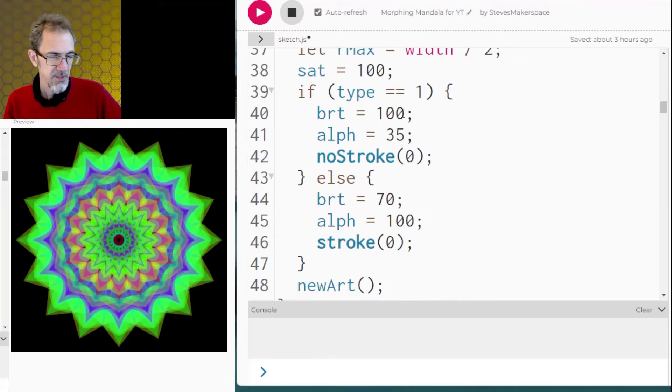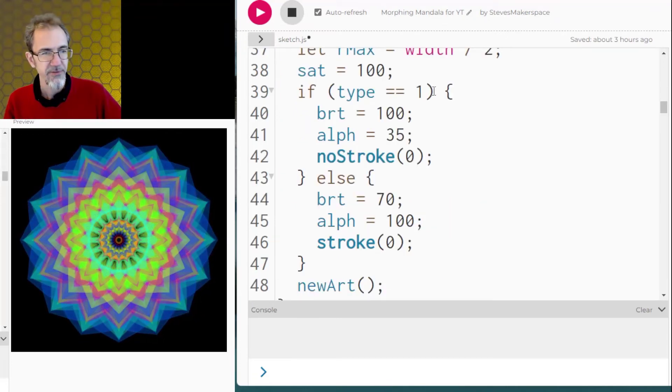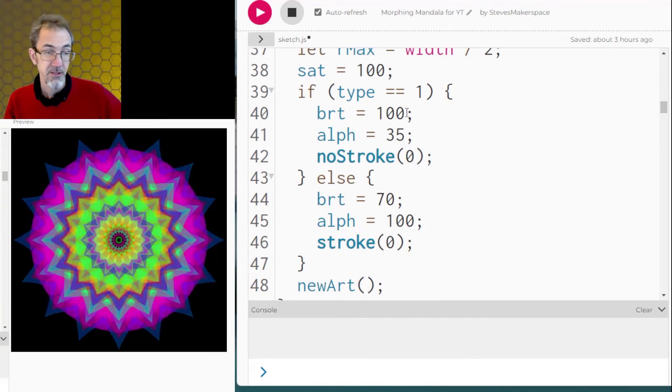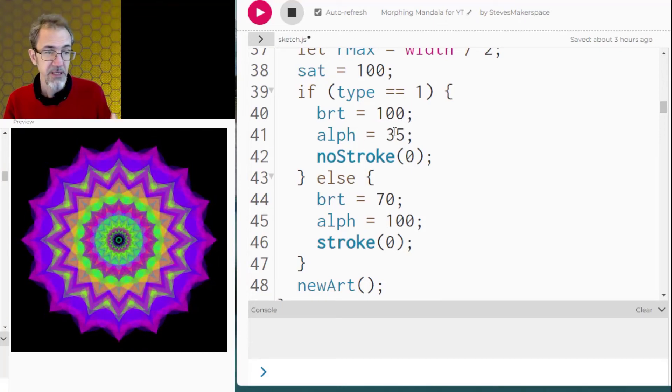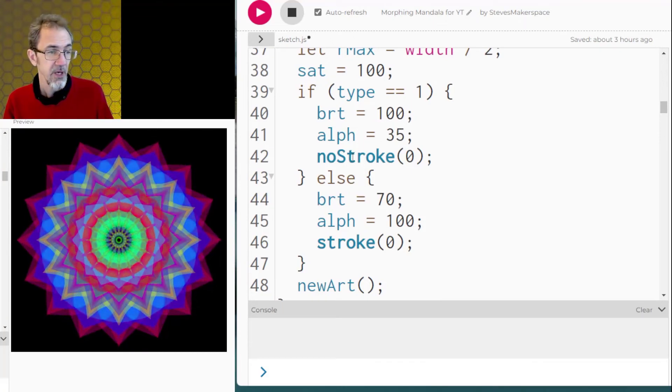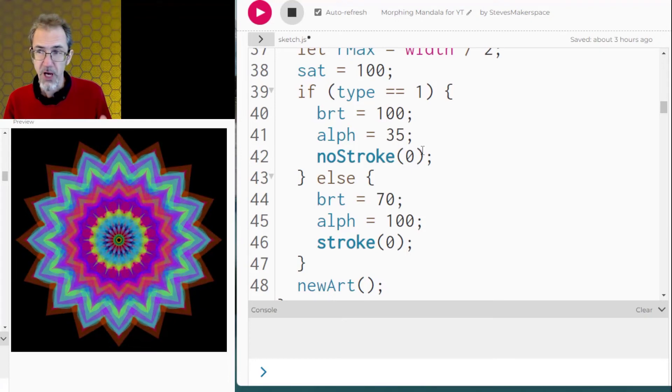And here's the section on the type of mandala. So if it's a type 1 mandala its brightness is 100 which is the maximum and the alpha is very low. And there's no stroke, no lines.